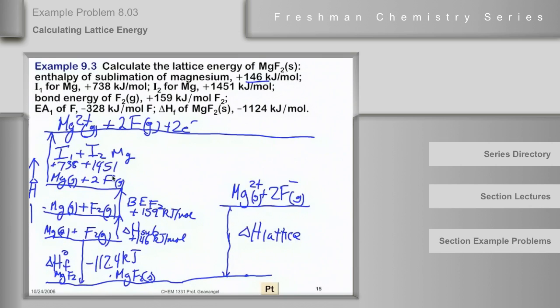Okay, so I look at these numbers, one of them is plus 738, and the other one is plus 1451. Okay, so so far we've been tapping our energy bank account heavily here, 146, 159, 738, 1451. Now we get some money back, some energy money back, because we let the electrons interact with the fluorines.